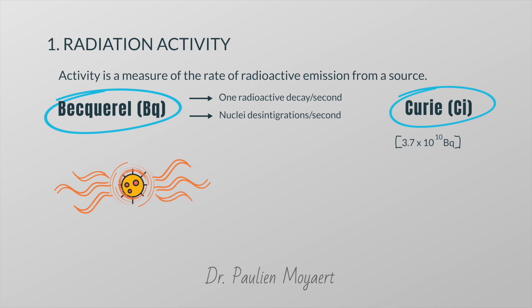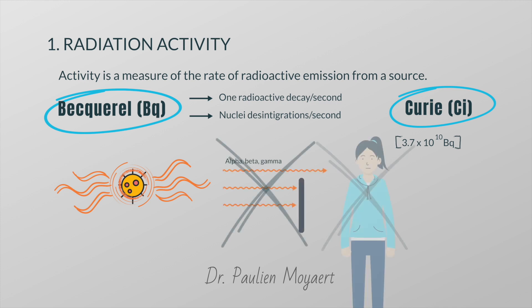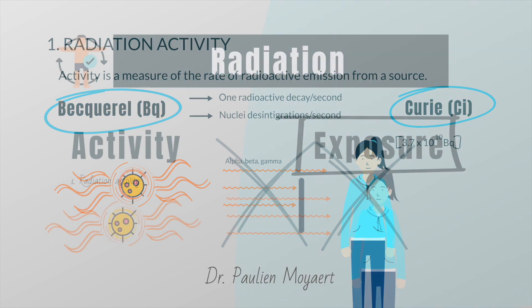The concept of activity is independent of the type of emission as well as independent of the material the radiation is impacting. In other words, activity tells nothing about the radiation dose that is actually absorbed by objects. If we want to know this, then we have to look at exposure.